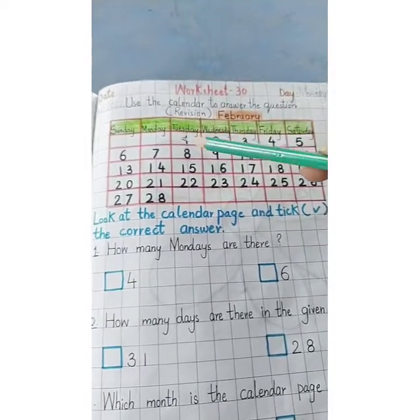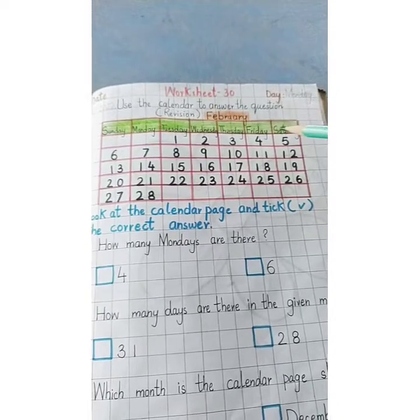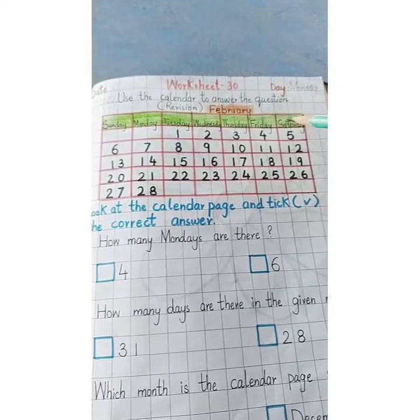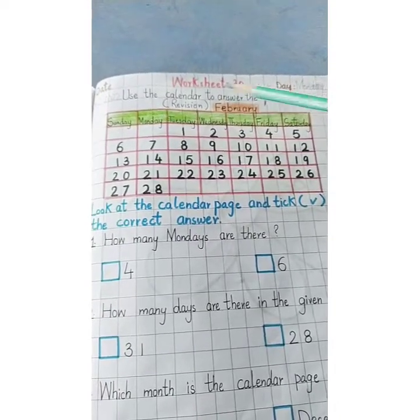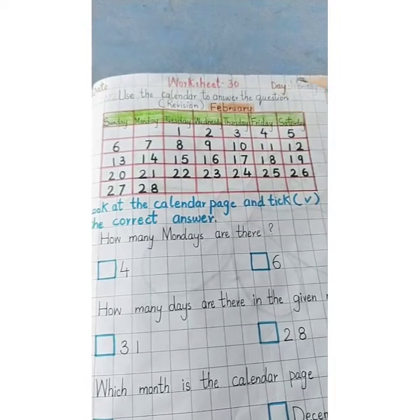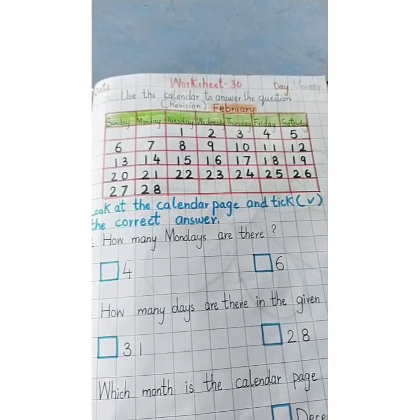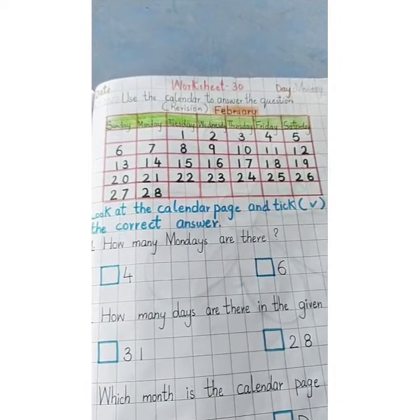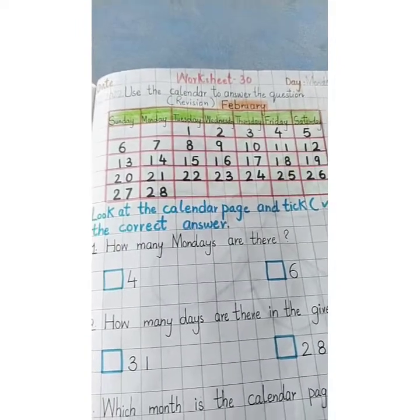There are 7 days in a week. How many days are in a week? Seven days. And which month is shown on the calendar? February month — it has 28 days.